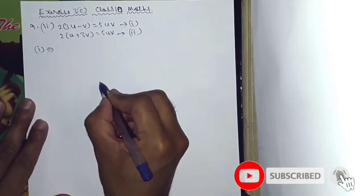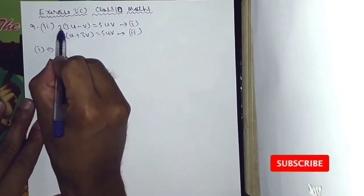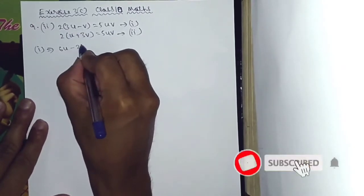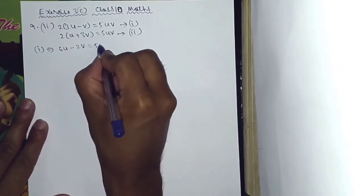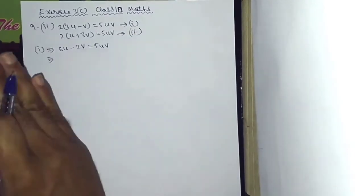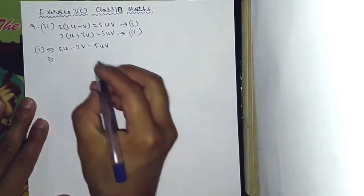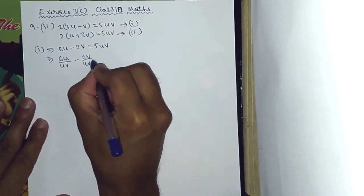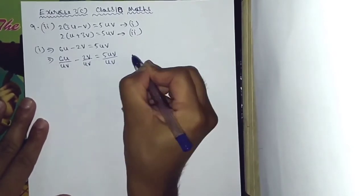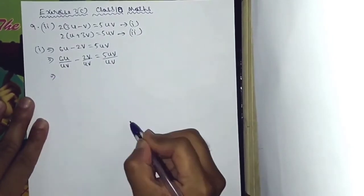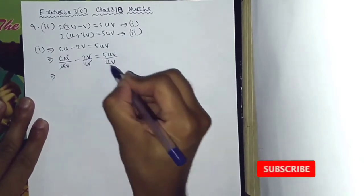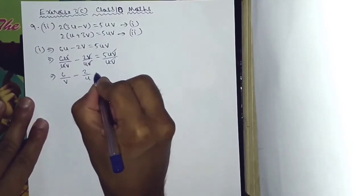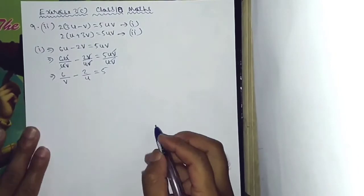Taking Equation 1: 2 into (3U minus V) equals 5UV, expanding gives 6U minus 2V equals 5UV. Dividing both sides by UV: 6U divided by UV minus 2V divided by UV equals 5UV divided by UV. After cancellation, this gives 6/V minus 2/U equals 5. This is Equation 3.